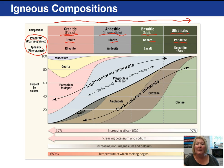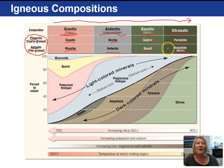Aphanitic igneous rocks — 'a' means not, so not-visible crystals. Examples include rhyolite, andesite, basalt, and komatiites, which no longer form at the Earth's surface due to cooling of the planet.